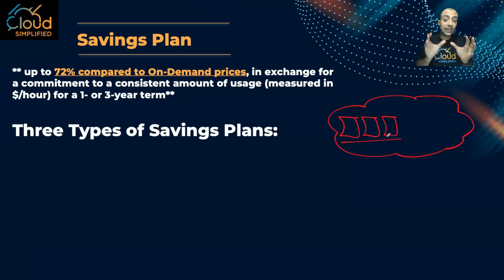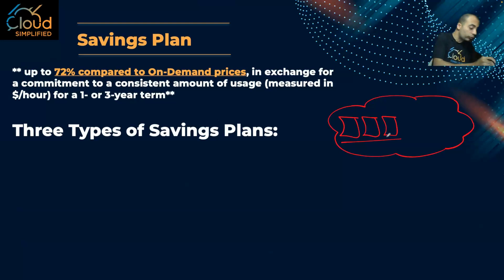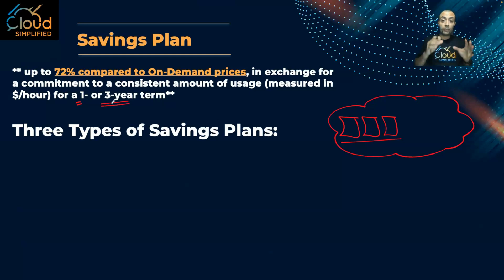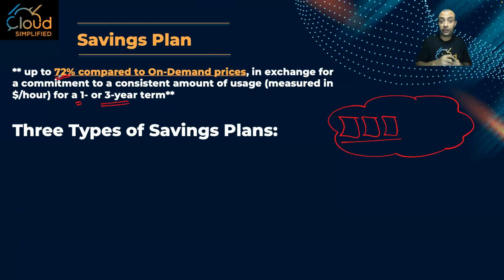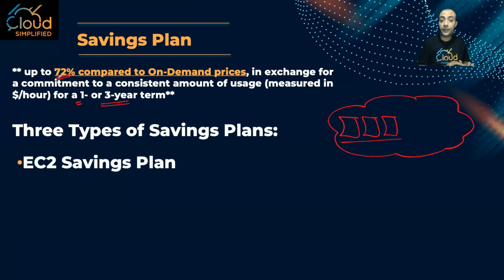If I know a server — like a SharePoint server or an Active Directory server — is going to be running 24/7, I can commit. The commitment options are either one year or three years. With a Savings Plan commitment, I can get up to 72% discount compared to On-Demand pricing. Savings Plans are ideal for instances I know will run continuously.